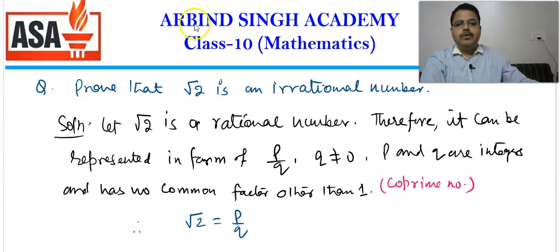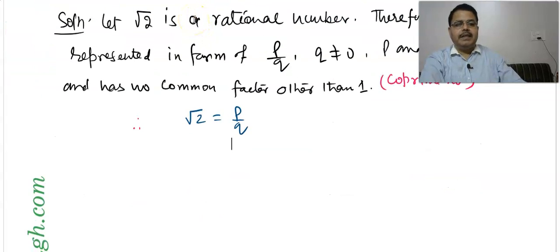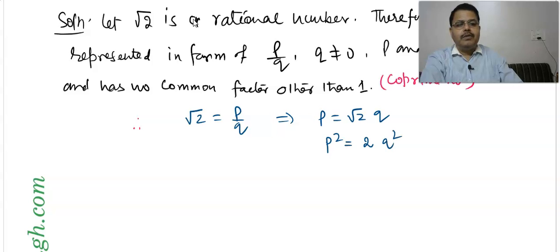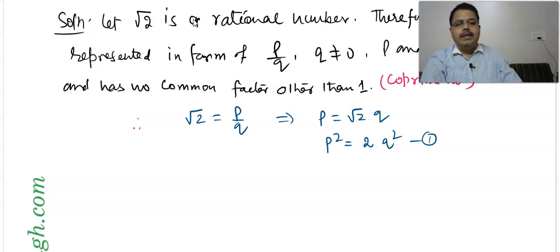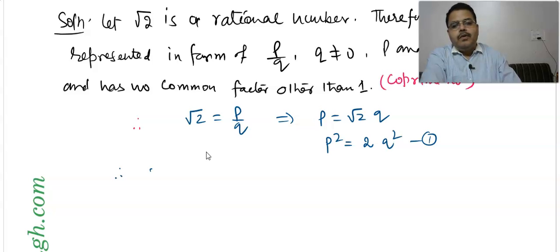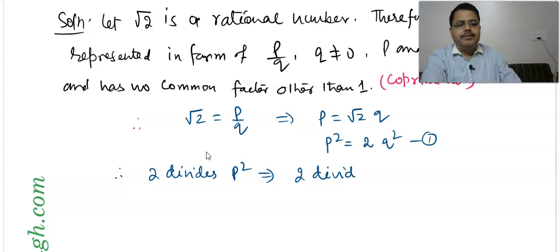This means that p equals root 2 times q. Squaring both sides, p² equals 2q². This means 2 is a factor of p², so 2 divides p². And therefore, by the theorem we just learned, 2 divides p as well.